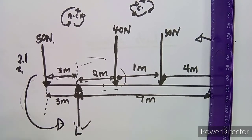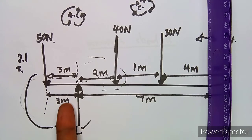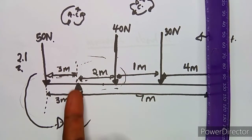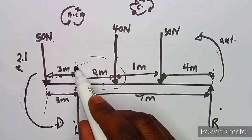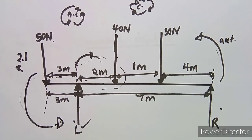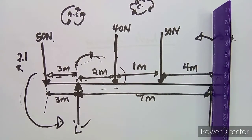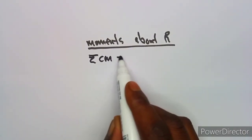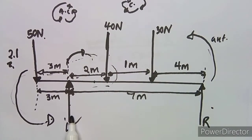When taking moments about R, support L moves back toward R in a clockwise direction — the same way a clock moves. So this time we start with clockwise moments. The sum of clockwise moments equals the sum of anti-clockwise moments. Clockwise: L×7.